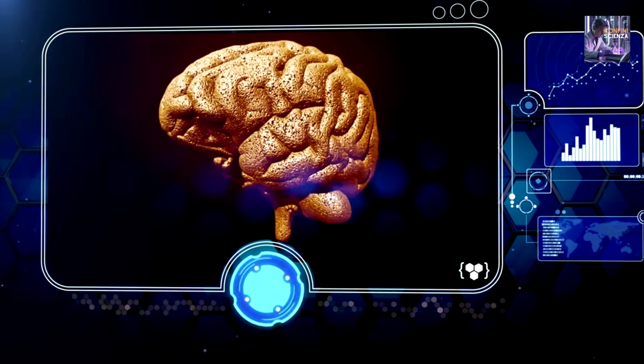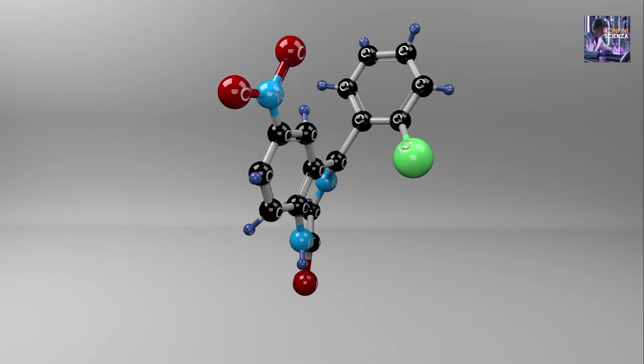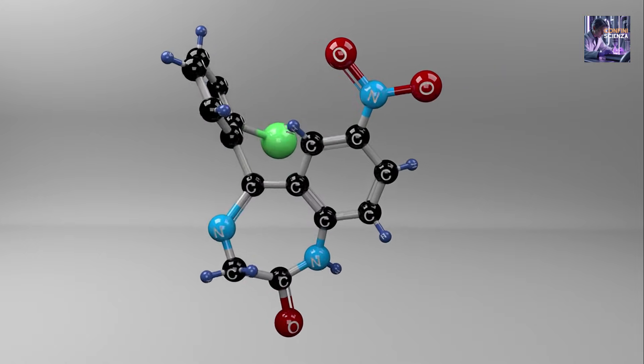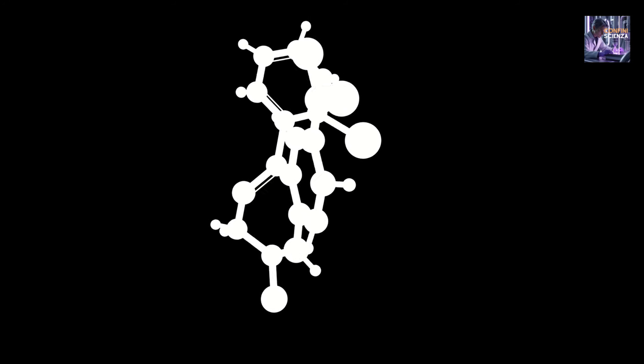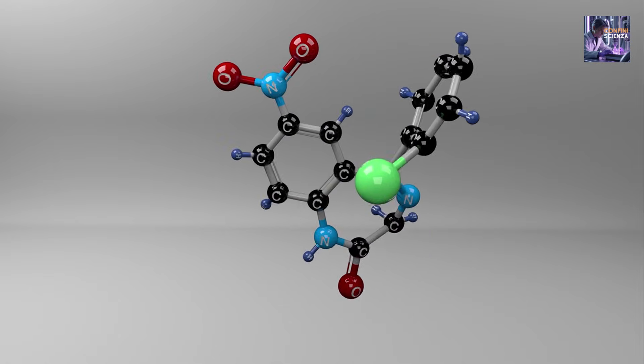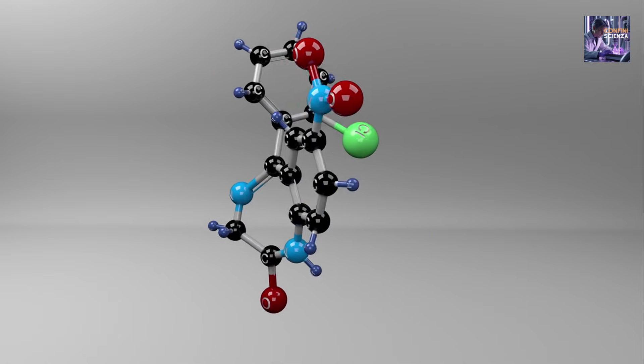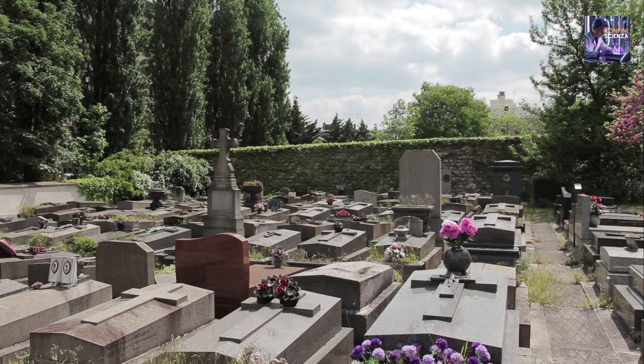This NEPTUNE model was an admirable attempt to bring order. It took every single popular neurological explanation and put it in one package. Lack of oxygen, hypoxia, excess CO2, temporal lobe activity, epileptic seizures, temporoparietal junction stimulation, REM phase intrusion, ketamine-like chemistry, and even the so-called electrical spikes in the dying brain. It seemed like the definitive explanation, the tombstone on the subject.